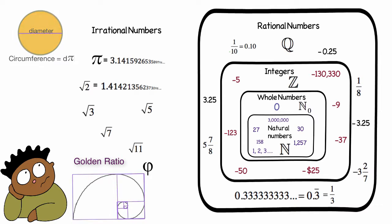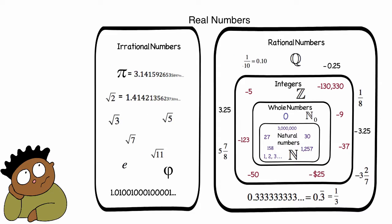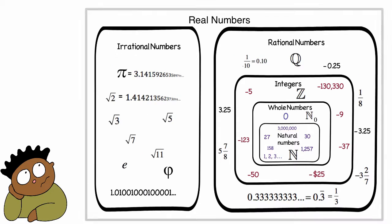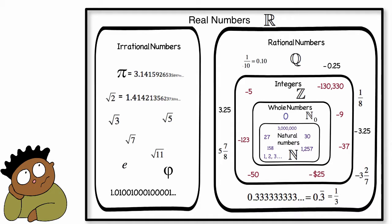When we include both rational and irrational numbers together, we have the set of real numbers, represented by the double-struck R. And why are they called real numbers? Because they're not imaginary. But more on that later.